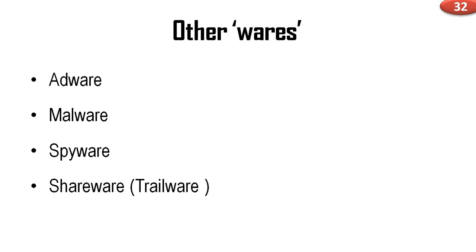Malware is basically malicious software — or simply we can call it badware. A virus is a software designed to damage a computer system without the owner's consent; basically a virus falls in the malware category. Another is spyware: spyware is software that hides itself somewhere on your computer and monitors the behavior of your activity, passing your information to third parties.